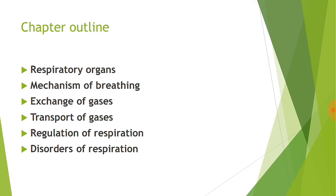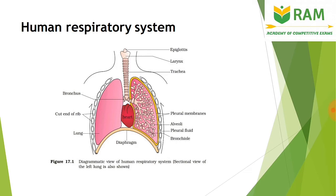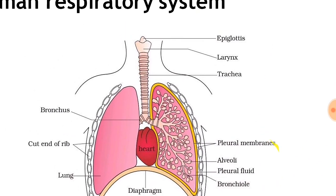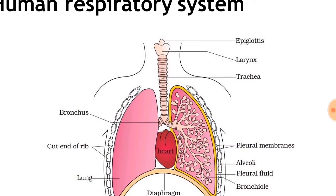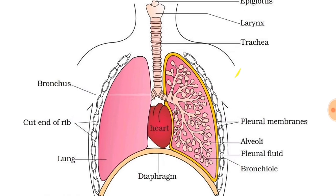Together you can make notes on whichever points you feel are important. Now let us go into the respiratory organs. The human respiratory system consists of two lungs placed in the pulmonary cavity. It starts with the epiglottis, then the larynx, then the trachea.